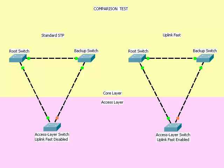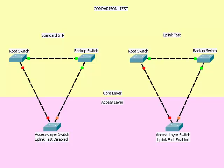First, let's pretend we have just configured the access layer switch with Uplink Fast. Next, we'll shut down the link between the root switch and the access layer switch and see how long it takes for the link from the backup switch to come up. It took less than one second.